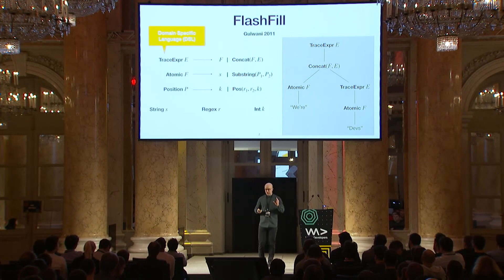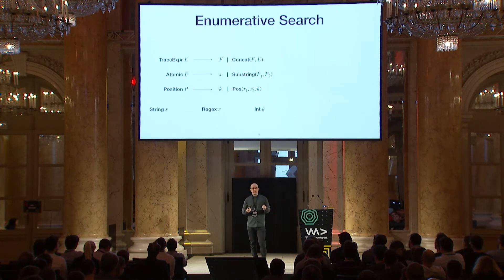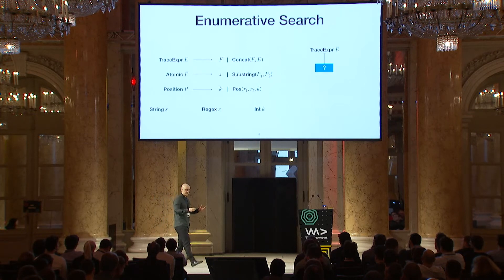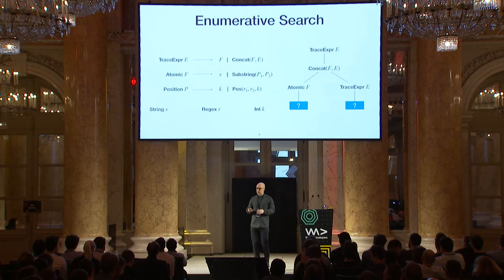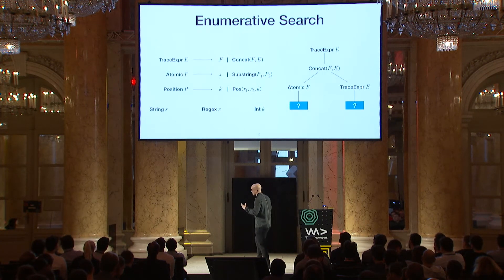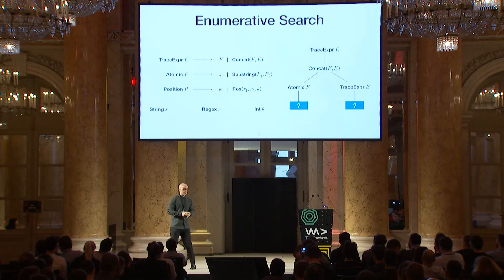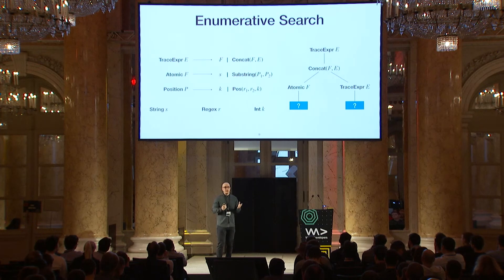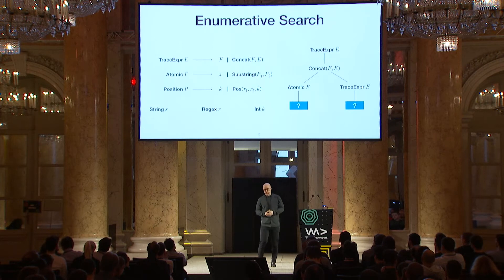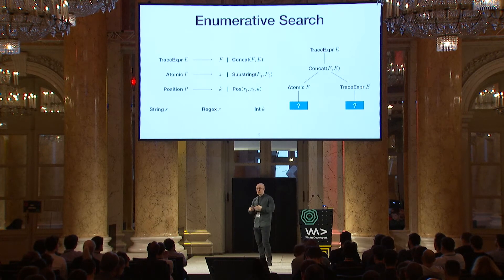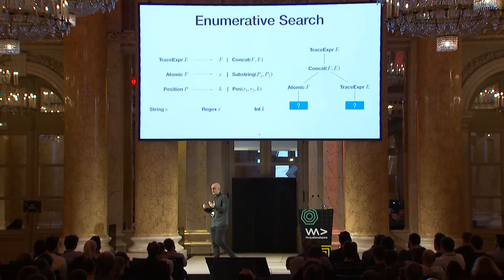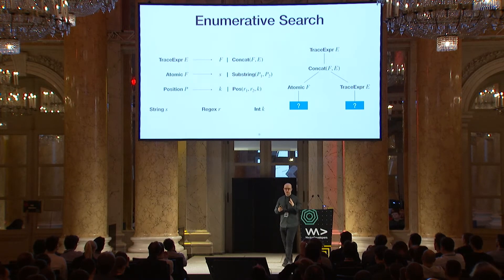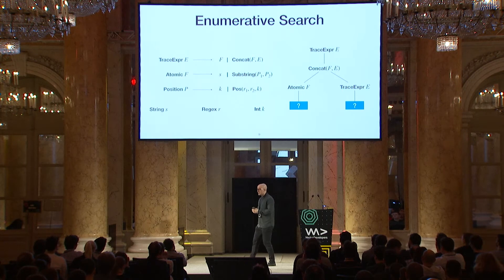The basic idea is fairly simple: given the grammar, we can enumerate all expressions. We start with a trace expression, maybe guess we need a concatenation, and then we have sub-problems that generate parts of the output. Whenever we have a complete program, we try it on the input-output examples — if it works, we use it; if not, we discard it. The problem, of course, is that the number of programs is infinite, which is very inefficient. So we use domain knowledge to make the search faster and cut off branches in the search tree.